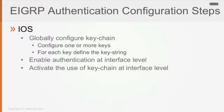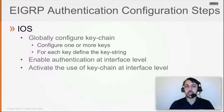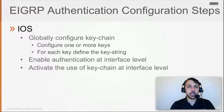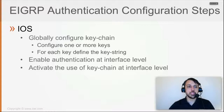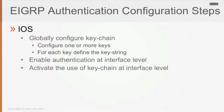So like in the NTP packet, the key number and the key string, alongside with the EIGRP packet, all of them are going to be entering the MD5 hash engine. It's going to result in an MD5 hash, and the MD5 hash is going to be attached to the EIGRP packet to be authenticated by the receiver.